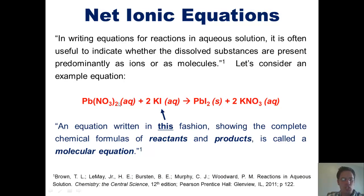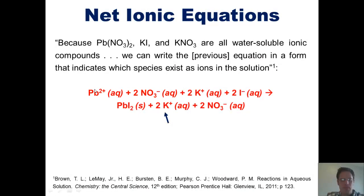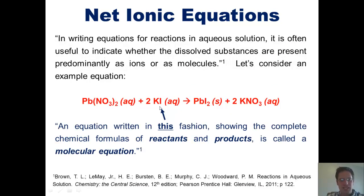You'll note that the 2 that's next to this nitrate actually ends up getting shuttled out front and to the left of the nitrate when we write it in this fashion. Similarly, when we look at potassium iodide, we can see that it is soluble in water, so I'm going to saw it in half, separating out a potassium +1 ion and writing AQ next to it, plus an iodide I⁻ ion with AQ next to it.